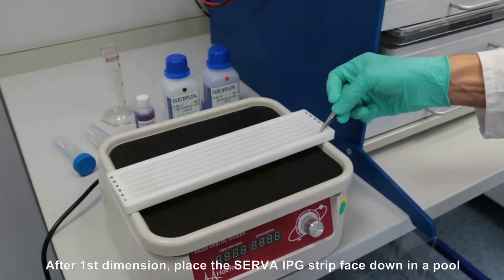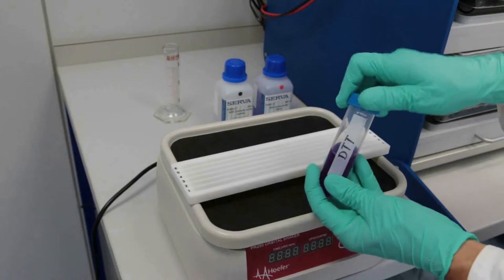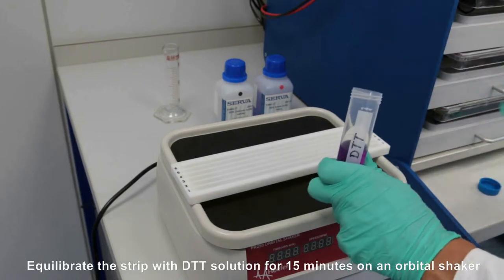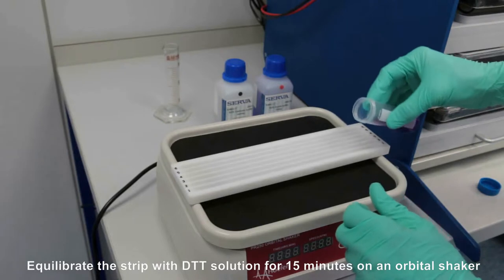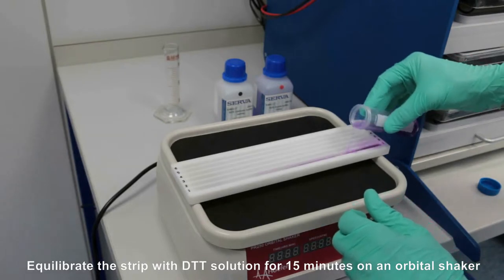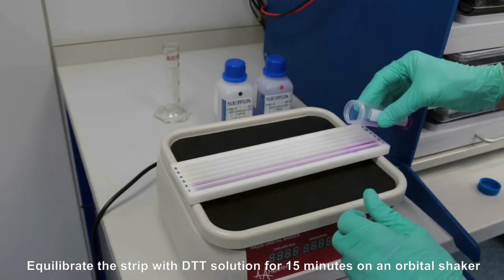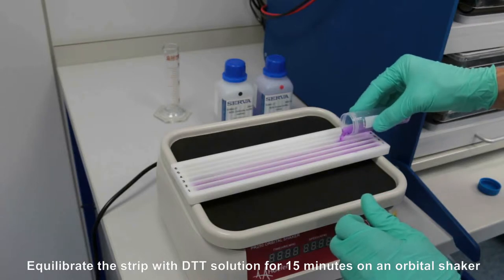When the focusing of the IPG strips is finished, place the IPG strips gel side down into a pool. Equilibrate the strip with DTG solution for 15 minutes on an orbital shaker.